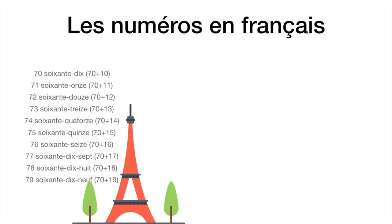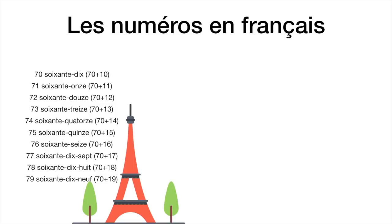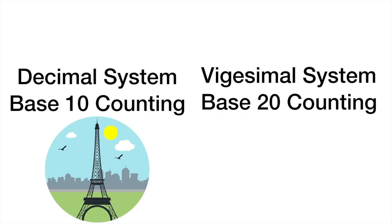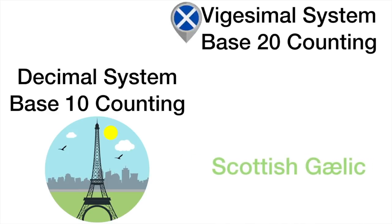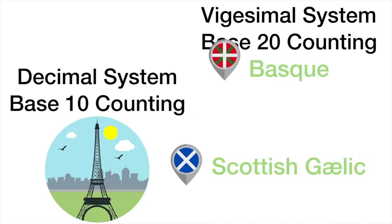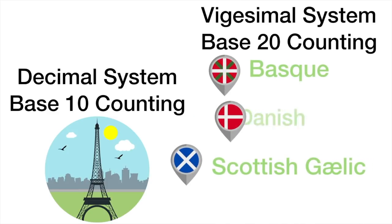So 60 to 79 is one block of 20, where 60 plus 1 to 19, and 80 to 99 is another block of 20, where 4-20 plus 1 to 19. Base 20 counting still exists in Scottish Gaelic, Danish, and Basque, and I believe a couple of other languages.